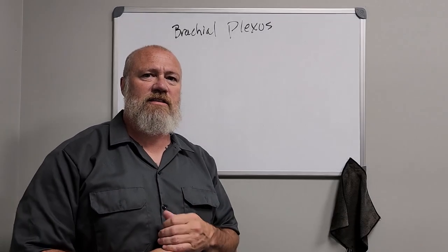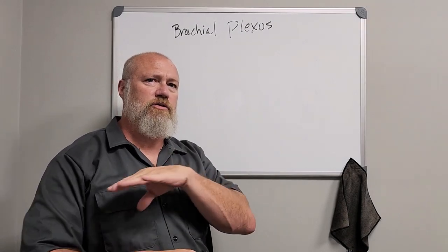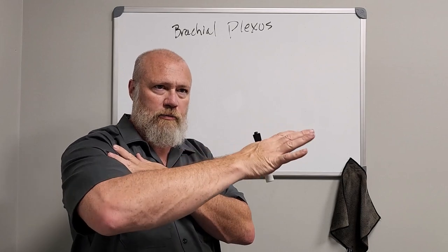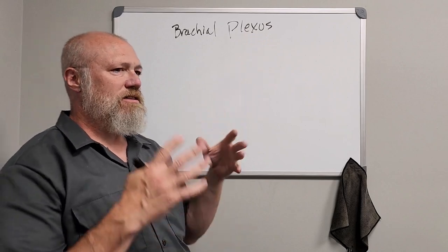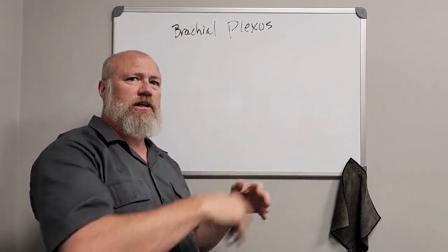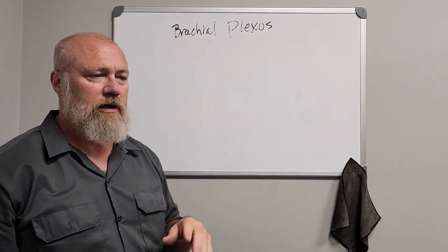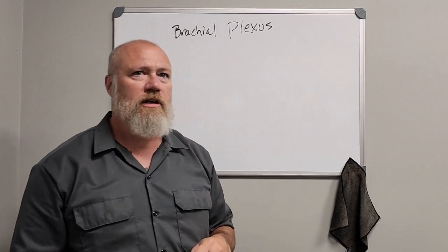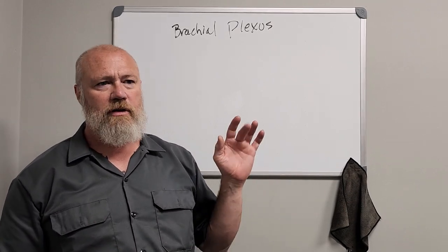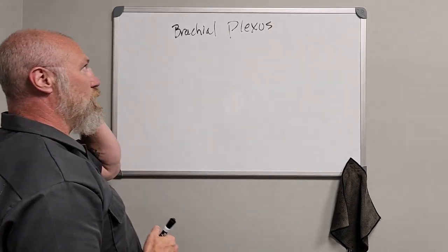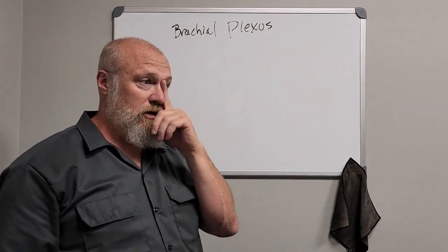Let's talk about the brachial plexus. This is a bundle of nerves that converge, intermingle, and then diverge into terminal branches that run through the upper extremity through the axillary region. A plexus is a converging, intermingling, and diverging of nerves from the roots and trunks of different vertebral or spinal cord levels out into terminal branches — peripheral nerves with names like the radial nerve, musculocutaneous nerve, and median nerve. I'm going to show you how to draw it.